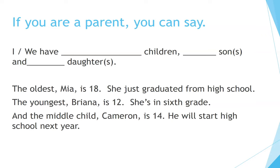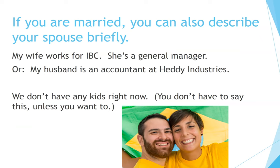And the middle child, Cameron, is 14 — he will start high school next year. If you are married, you can also describe your spouse briefly. My wife works for IBC; she's a general manager. Or, my husband is an accountant at Hetty Industries. We don't have any kids right now. You don't have to say this unless you want to.